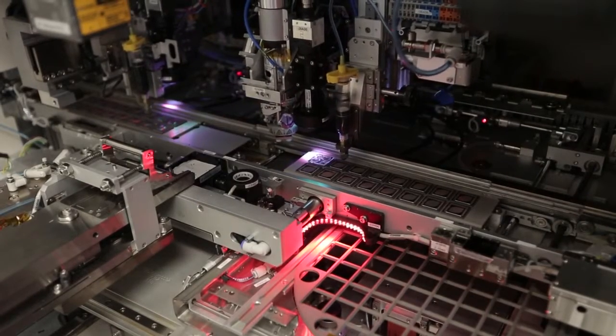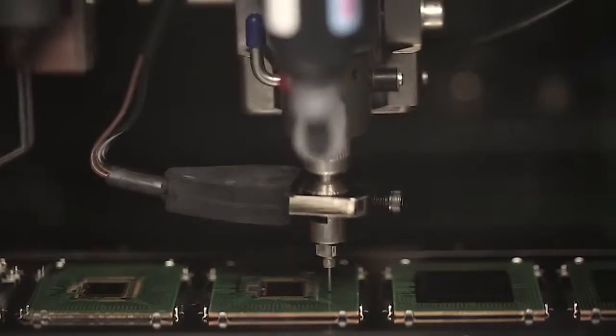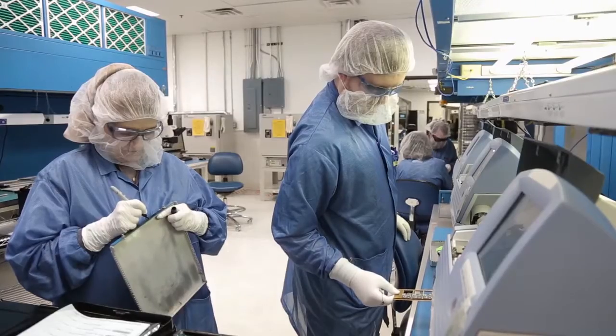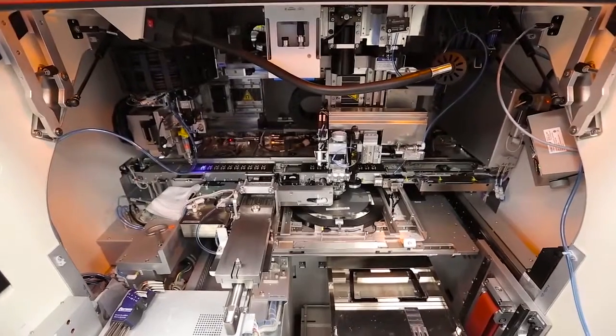They are going to take die, wafers, silicon, they're going to dice it up, attach it to substrates, and they're going to ruggedize it by encapsulating it or maybe doing a transfer mold over it. Then we're going to put that into a customer's system.